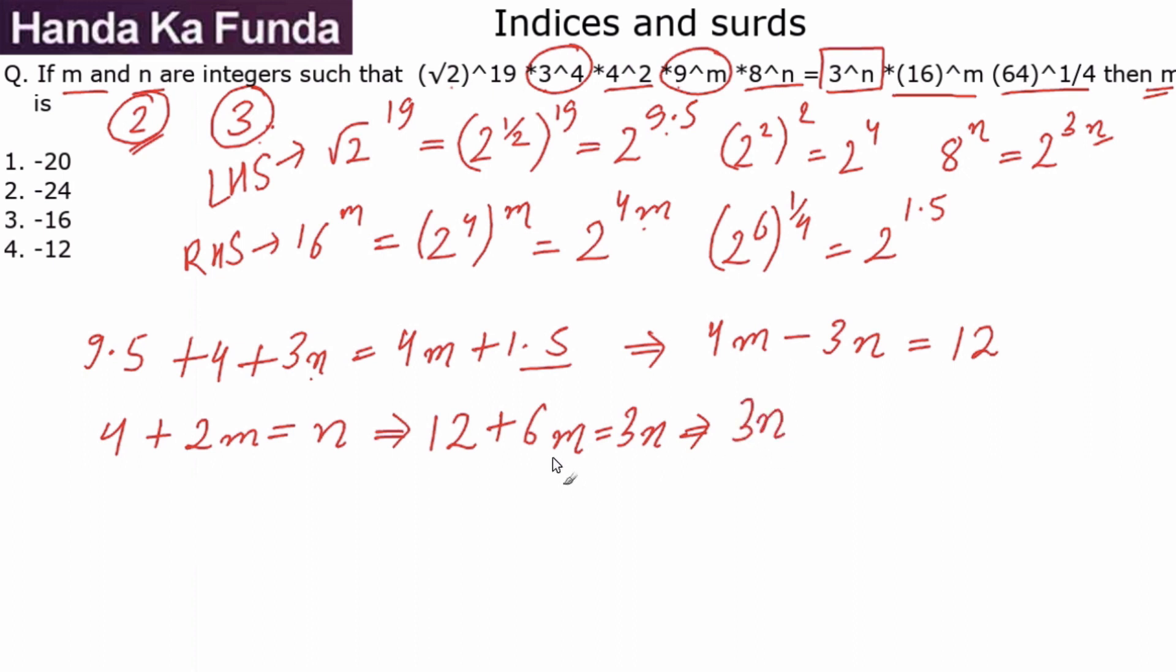Let me write it in a format so that it is easier to cancel and everything. So I will rewrite this as 3n—I will take this to the other side—minus 6m. 12 remains on the same side, so this is 12. And now I add these two equations. When I add these two equations, 3n and 3n will cancel.